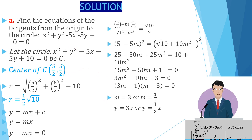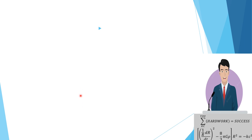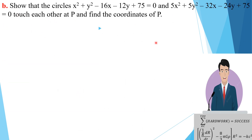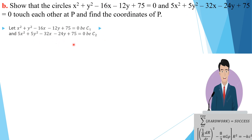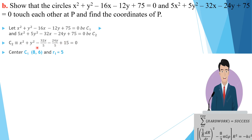Moving on to Part B, which asks us to show that these two circles touch each other at P and find the coordinates of P. We call the first circle C1 and the second C2. For C2, since the x² and y² coefficients are both 5, we can divide through by 5 to simplify. As always in coordinate geometry, we find the centers and radii of both circles. For C1, negating and halving the coefficients gives center (8, 6), and the radius r1 = 5.